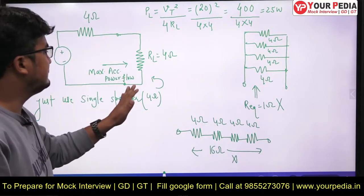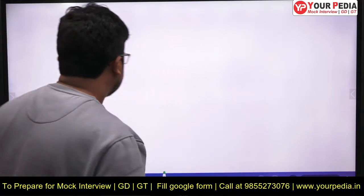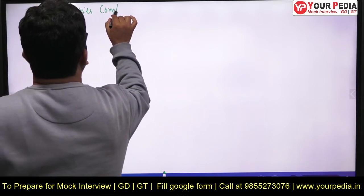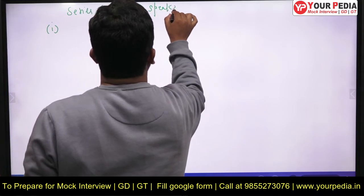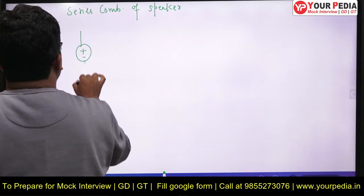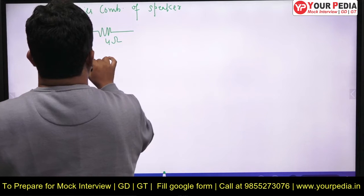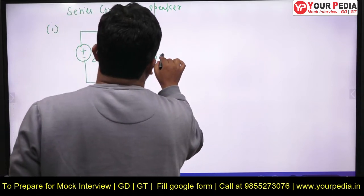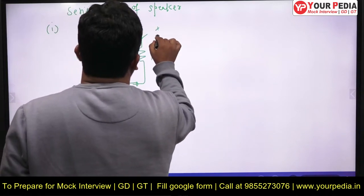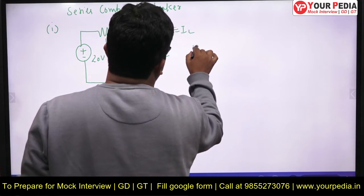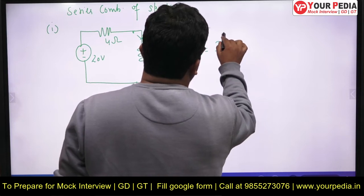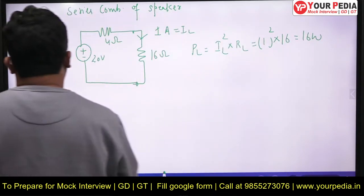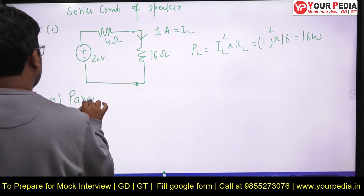Let's verify by calculating each case. For the series combination of speakers: the circuit has internal resistance 4 ohms, source 20V, and load resistance 16 ohms. The current is 20/(4+16) = 1 ampere. The load power is IL² × RL = 1² × 16 = 16 watts.